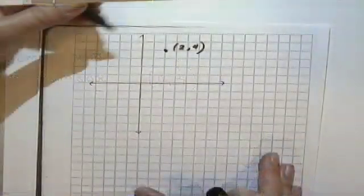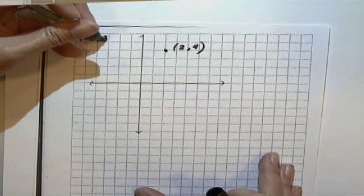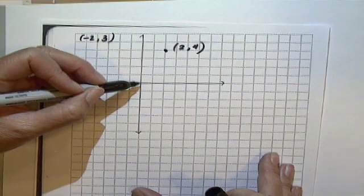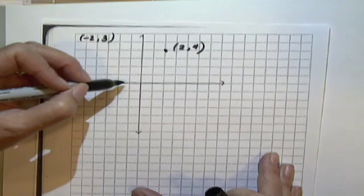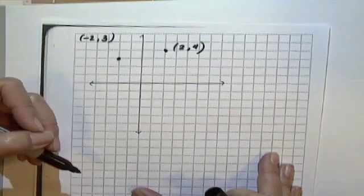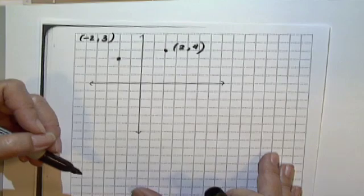If we were to have a negative number, for example, what if we were asked to graph the point (-2,3)? That means start here. Negative means go left. So instead of going this way, we'd go left 2, and then up 3.